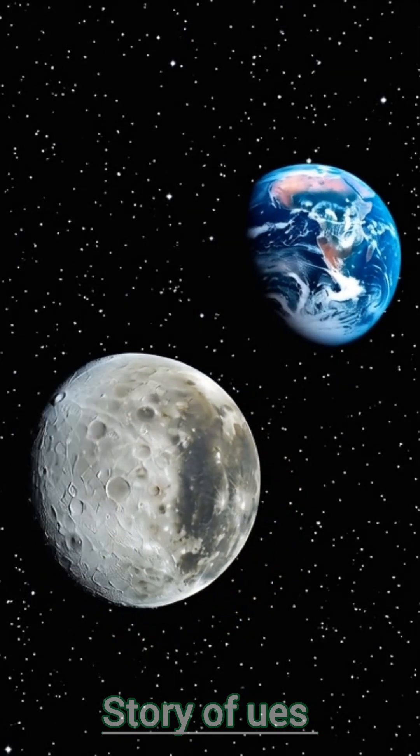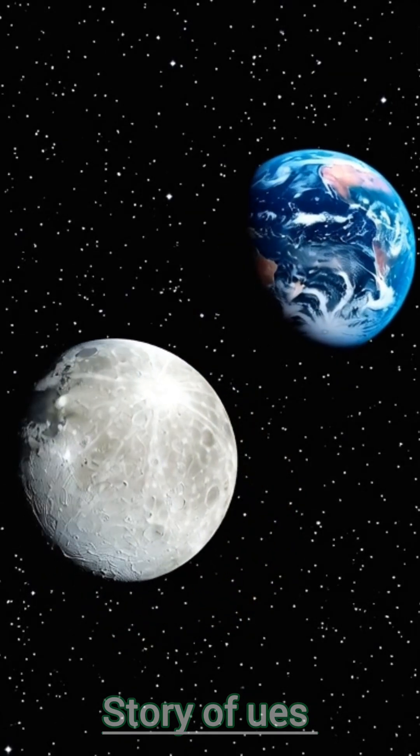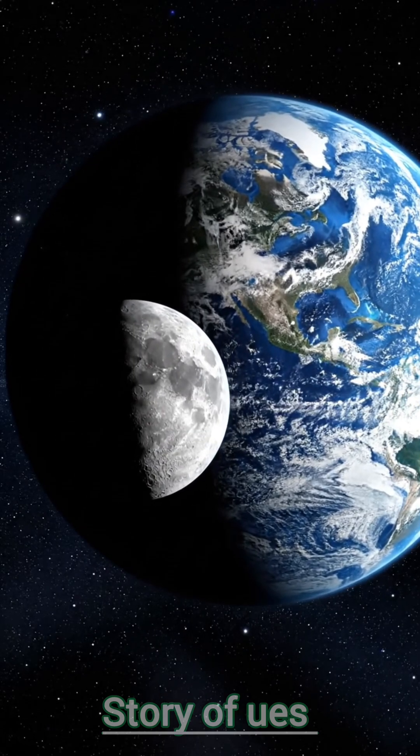The Moon is the Earth's only natural satellite. Its radius is about 1,737 kilometers, roughly one-fourth that of Earth.